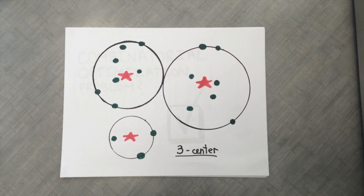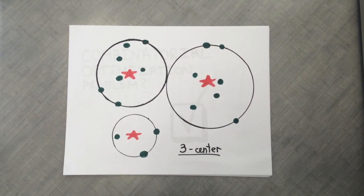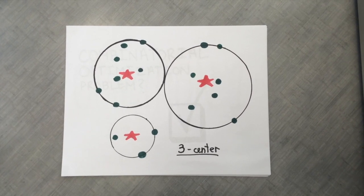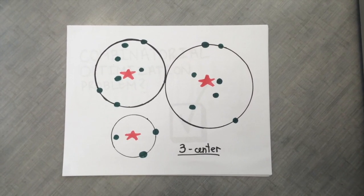This is an example of a Euclidean p-center, three-center problem solution. The centers, or stars, are positioned so that the distances to all the demand points are minimal.